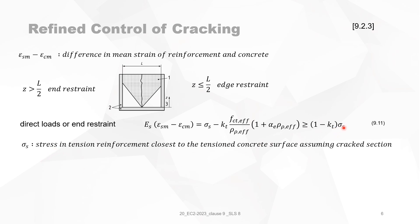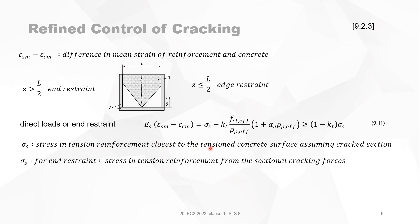Now we look at the different elements of this formula. Sigma S is the stress in tension reinforcement closest to the tension concrete surface, assuming a cracked section. When you have two layers of reinforcement, Sigma S is the tension in the layer of reinforcement closest to the surface.